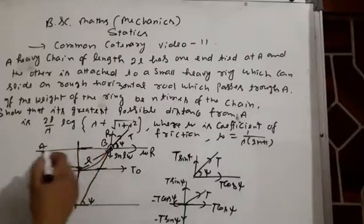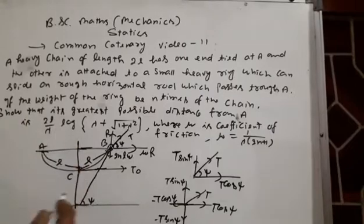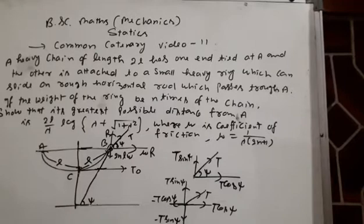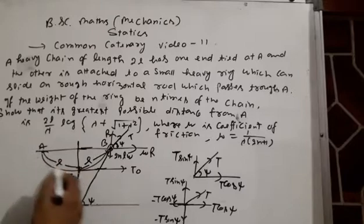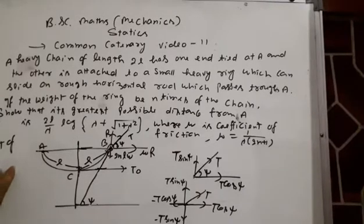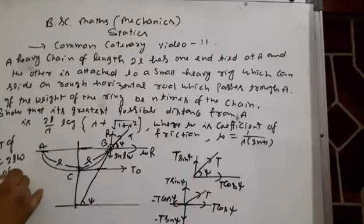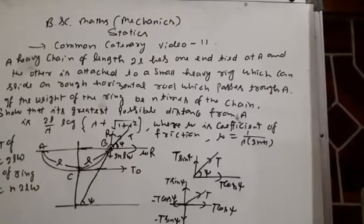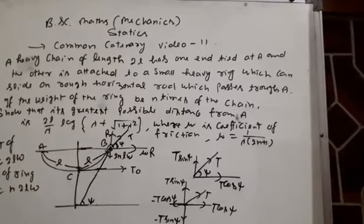The road passes through point A. If the weight of the ring is n times the weight of the chain, and the length of the chain is 2L, then the weight of the chain is 2nLW. We need to find the greatest possible distance from A, and the friction coefficient μ is given.